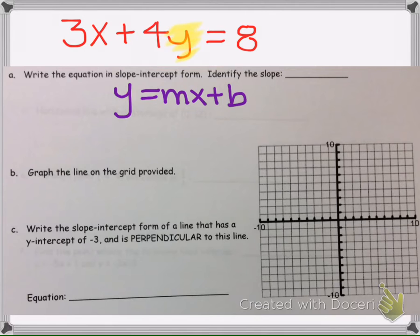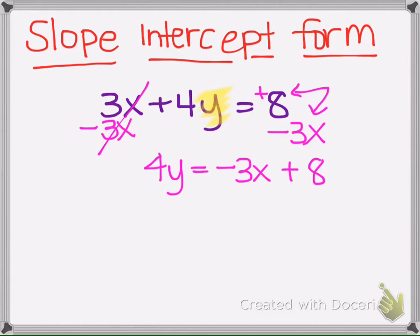The reason why I do that is because the x term is usually right after the equal sign, and the constant goes last, so I'm going to keep it consistent with that. Then to leave the y by itself, since this 4 is being multiplied as the coefficient of the y, we undo it by dividing because 4 divided by 4 is 1y. So whatever we do to one side, we have to do to the other side. We're dividing everything by 4.